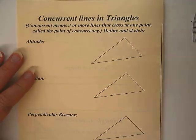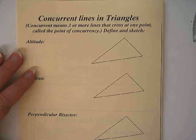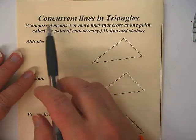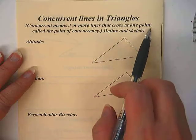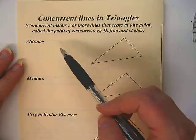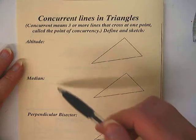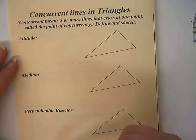We're in our triangle notebooks and we're learning about concurrent lines in triangles. Concurrent means three or more lines that cross at one point called a point of concurrency. There are four different types of concurrent lines.